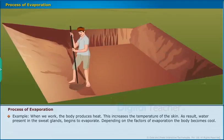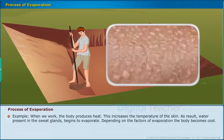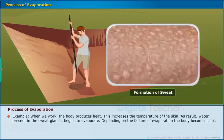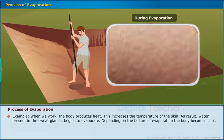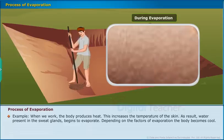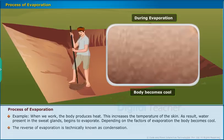Example: When we work, the body produces heat, increasing the temperature of the skin. As a result, water present in the sweat glands begins to evaporate depending on the factors of evaporation, and the body becomes cool. The reverse of evaporation is technically known as condensation.